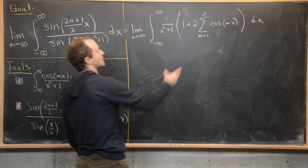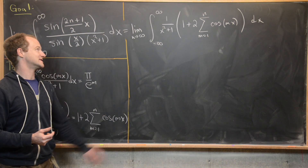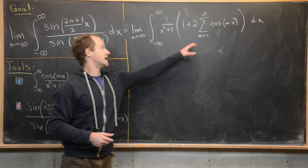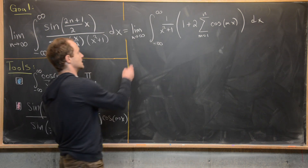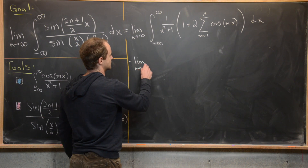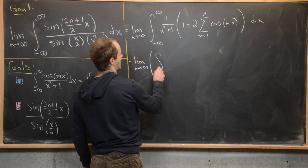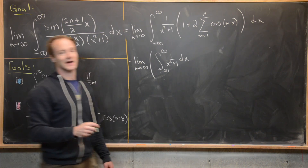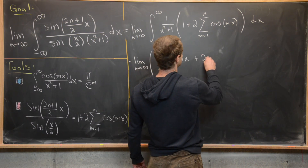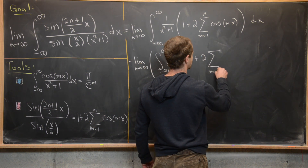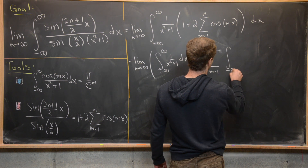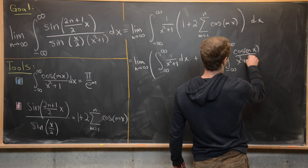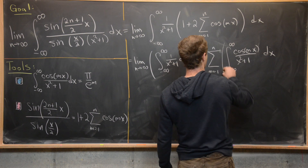Since we have a finite sum inside the integral, we can exchange the order of integration and summation. This gives the limit as n→∞ of: the integral of 1/(x²+1) dx, plus 2 times the sum from m=1 to n of the integral from −∞ to ∞ of cos(mx)/(x²+1) dx.